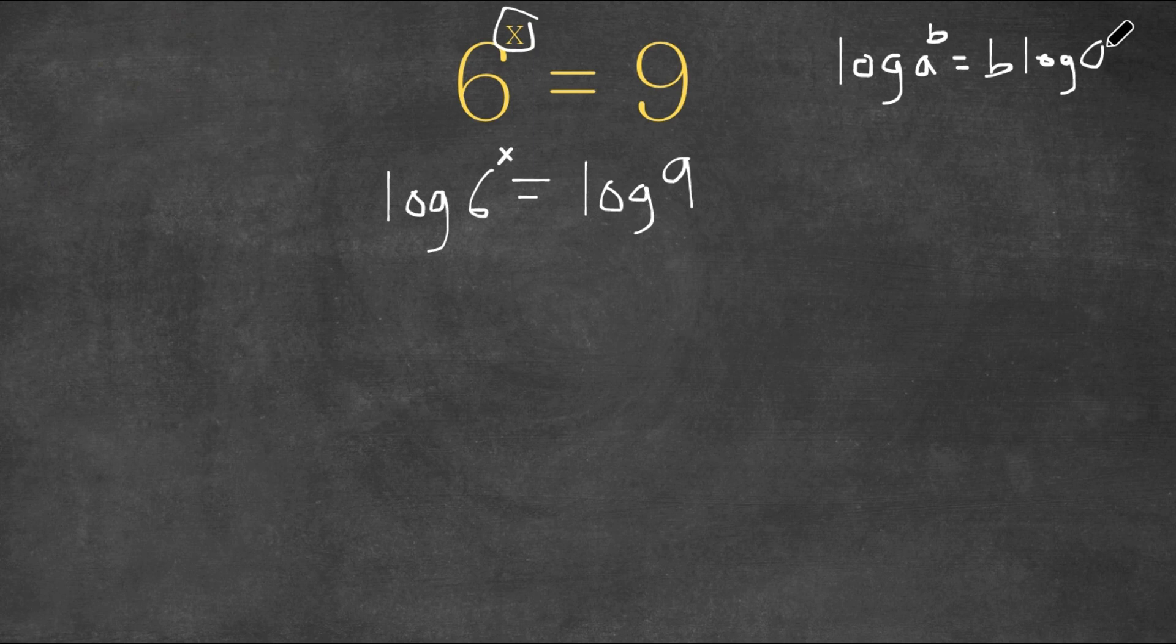a. So what we did was we took our exponent and moved it in front of the log. This is one of the important properties of logarithms. Right here we have log 6 to the power of x, so how would we simplify